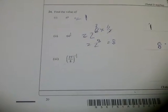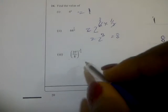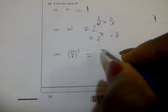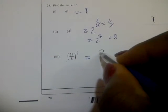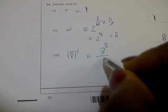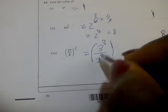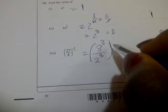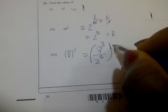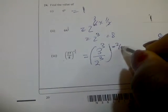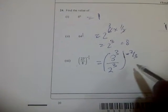For question number 24 III, you have 27 over 8 all raised to the power negative 2 over 3. Find the value of that. This is the same thing as 3 raised to the power 3 over 2 raised to the power 3, all raised to the power negative 2 over 3.